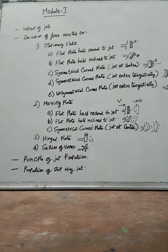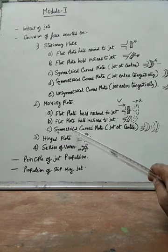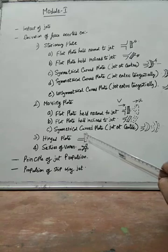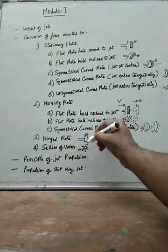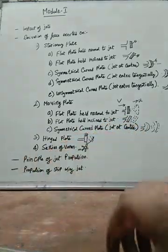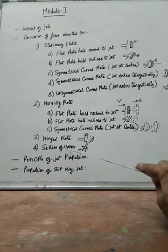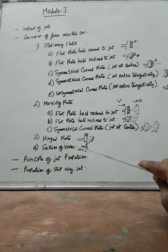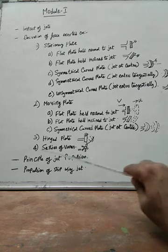I will show you the hinge plate. If we put a jet on the plate, this plate will swing — that is the hinge plate. We have also learned the series of vanes: in the turbine and Pelton wheel turbine, the blades move. That is the derivation.